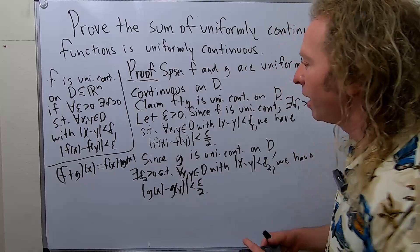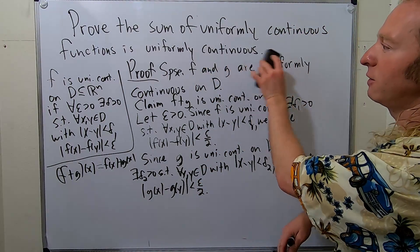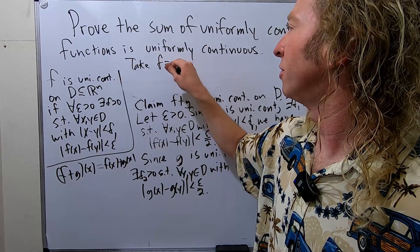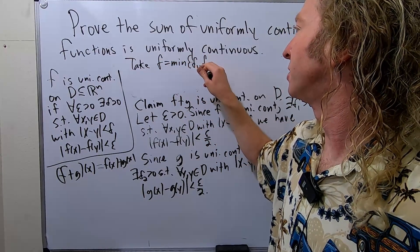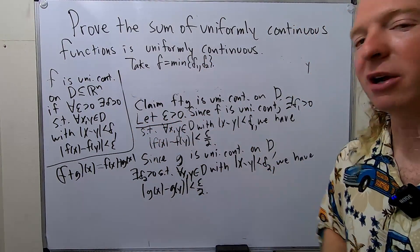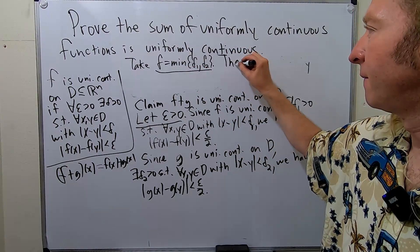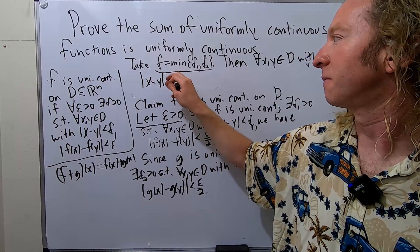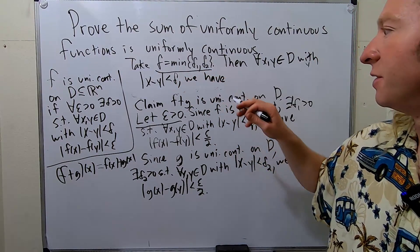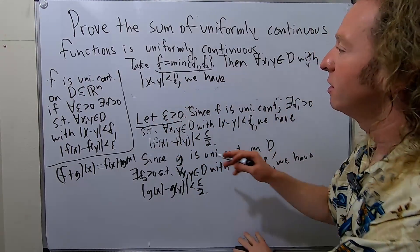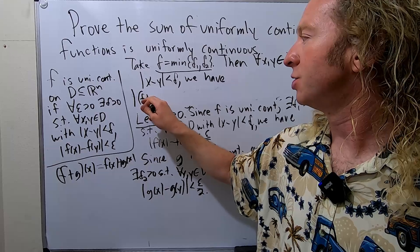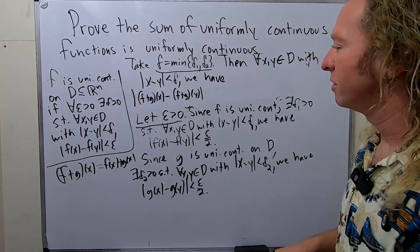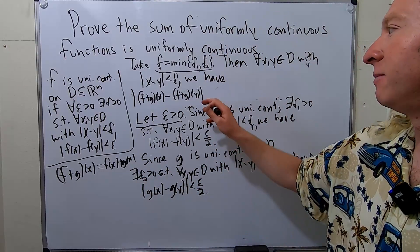Now we're going to take delta to be the smaller of the two: delta equals the minimum of delta_1 and delta_2. That's our delta for the proof. So we have our epsilon greater than 0, we've chosen our delta. Then for all x, y in D with |x − y| less than delta, we look at the distance between (F+G)(x) and (F+G)(y): the magnitude of f(x)+g(x) minus f(y)+g(y).